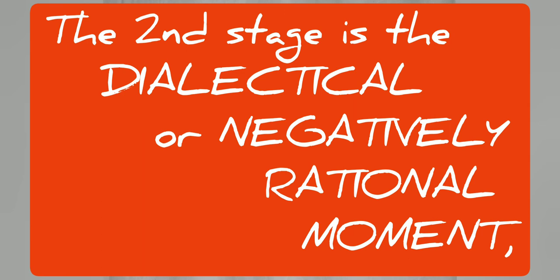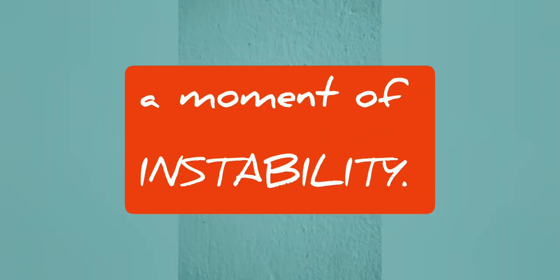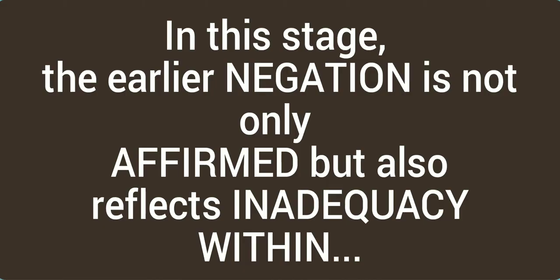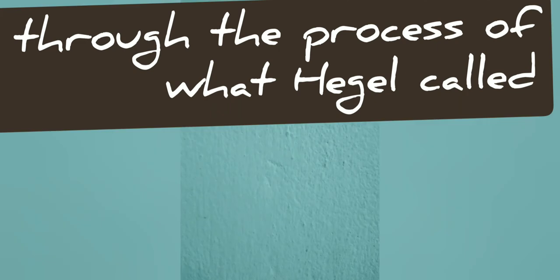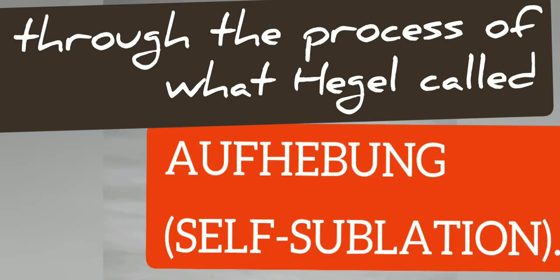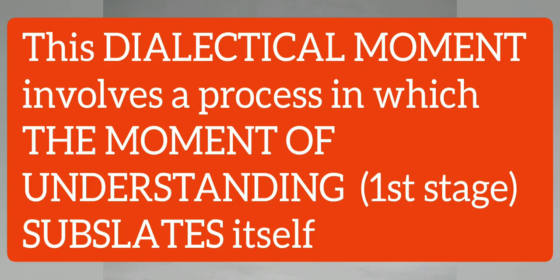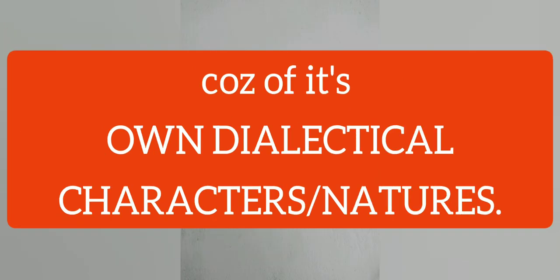The second stage is the dialectical, or negatively rational, moment of instability. In this stage, the early negation is not only affirmed but also reflects inadequacy within. That is, the supposed fixity in the first stage passes into its opposite through the process of what Hegel calls Aufhebung, or sublation. This dialectical moment involves a process in which the moment of understanding, established in the first stage, sublates itself because of its own dialectical character or nature.